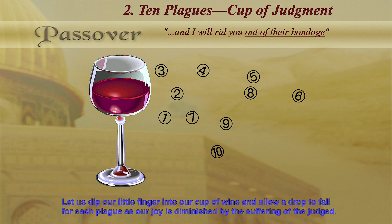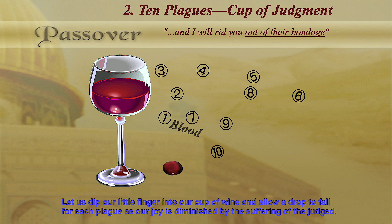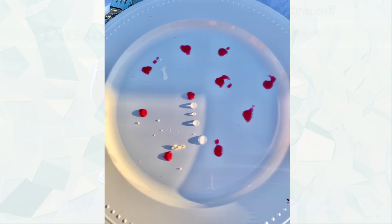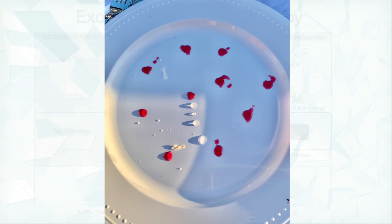On the second cup — the cup of the ten plagues — this is so meaningful: the cup represents joy because God is delivering you. But as they go through each of the ten plagues and say the name — the blood, the frogs — they take a drop of wine out of the cup and place it on their plate. One drop for each of the ten plagues, representing that their joy is diminished because others have suffered in these judgments. They do that before drinking the cup of joy at being rid of their bondage.